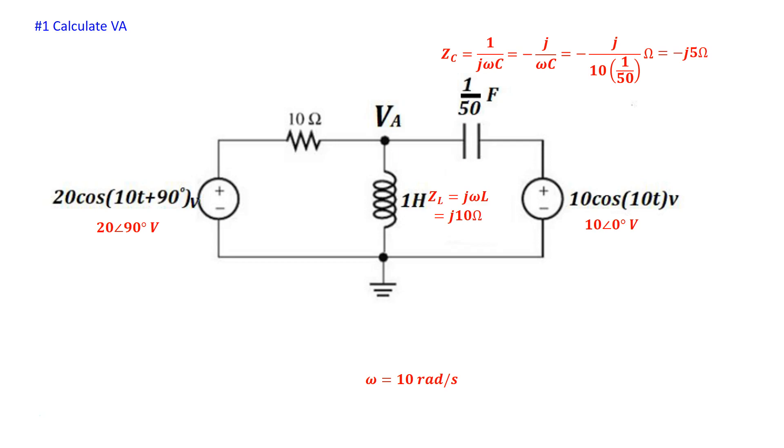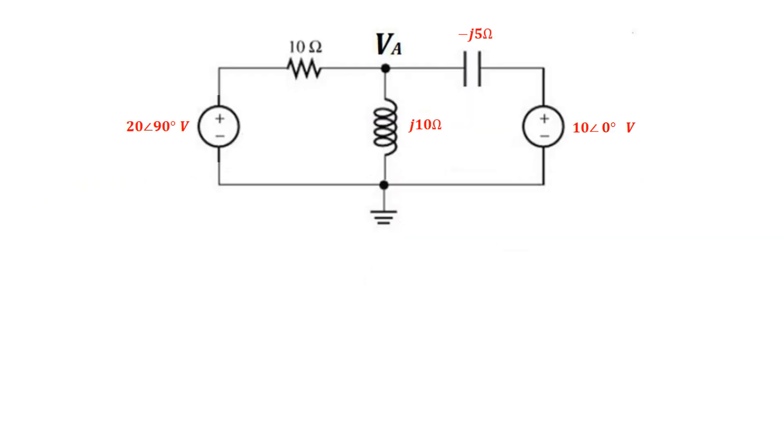So we found the impedance of the inductor to be j10 ohms. We found the impedance of the capacitor to be minus j5 ohm. And the impedance of the resistor is 10 ohms. So now we have a circuit all in a phasor domain representation. So here's our circuit.